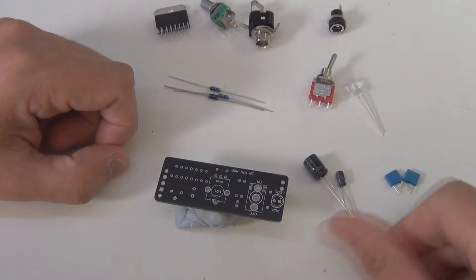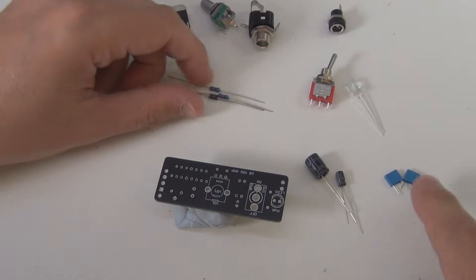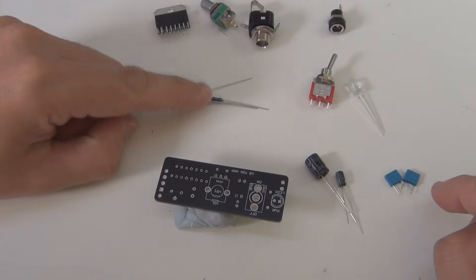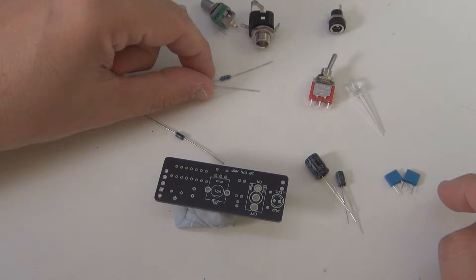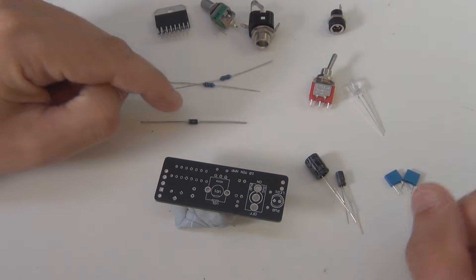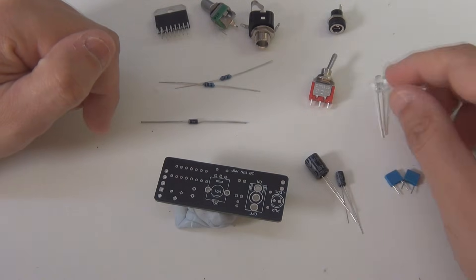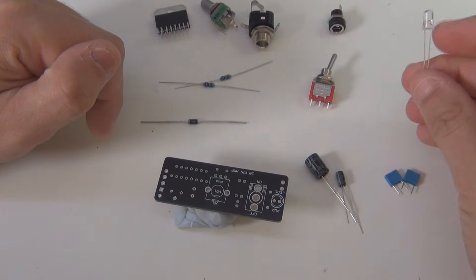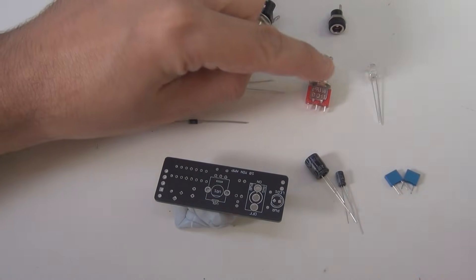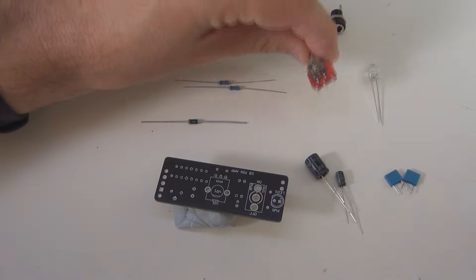These electrolytic caps are polarized, the film caps are not polarized, the resistors are not polarized, the diode is polarized with a stripe on it, so you've got to make sure you put these ones around the right way. The LED is also polarized, it needs to go in the right way around. The switch is actually not polarized, you can put that in either way around.